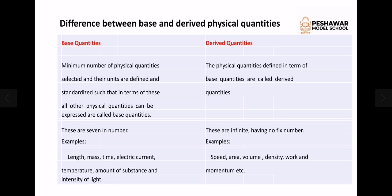The seven base quantities are: length, mass, time, electric current, temperature, amount of substance, and intensity of light. Examples of derived quantities include speed, area, volume, density, work, and momentum.